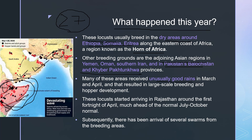Many of these areas received unusually good rains in March and April, which resulted in large-scale breeding and hopper development. These locusts started arriving in Rajasthan around the first fortnight of April, much ahead of the normal July–October arrival period. Generally they come to western Rajasthan and Gujarat from July to October, but this time they arrived 3–4 months earlier.